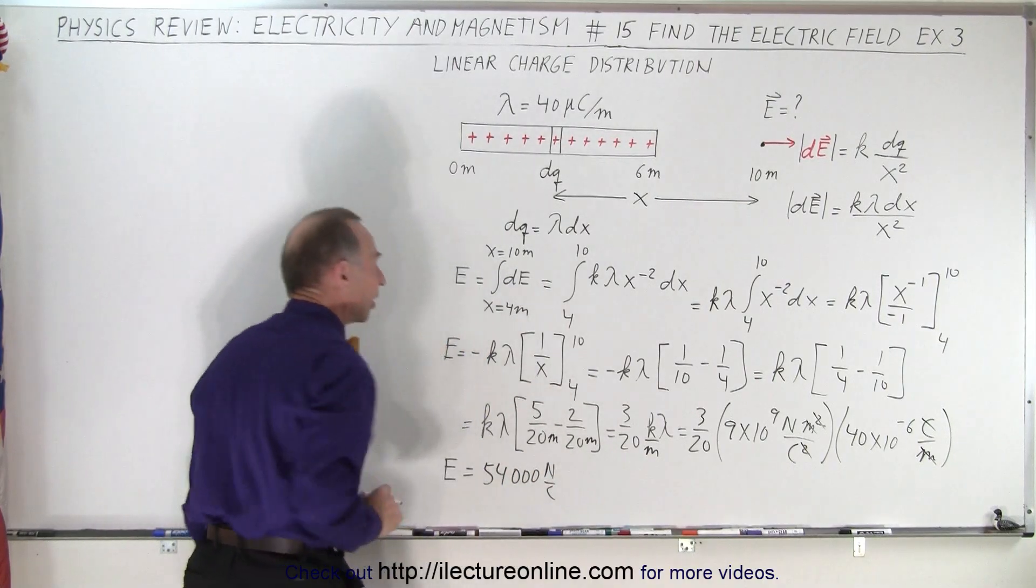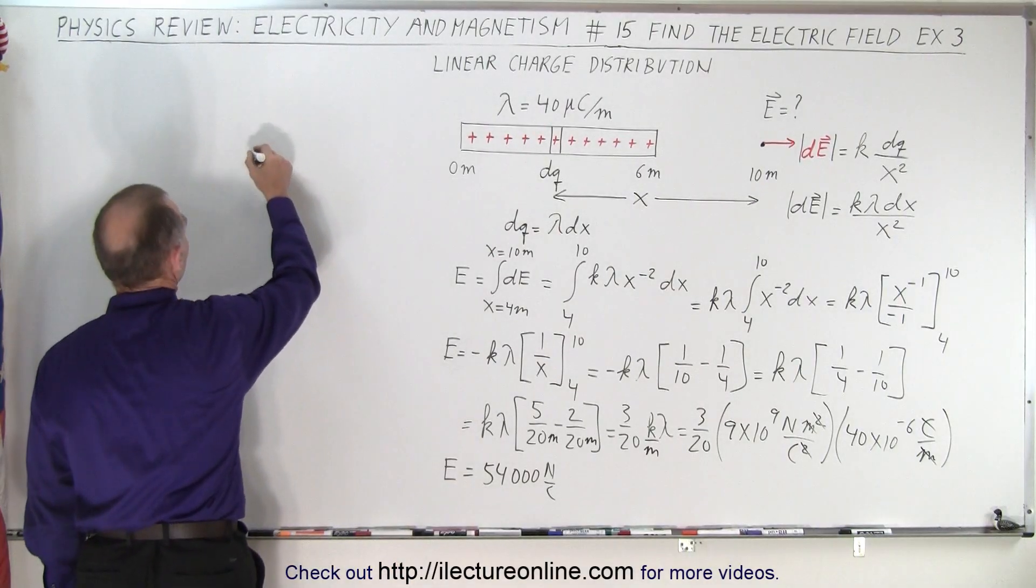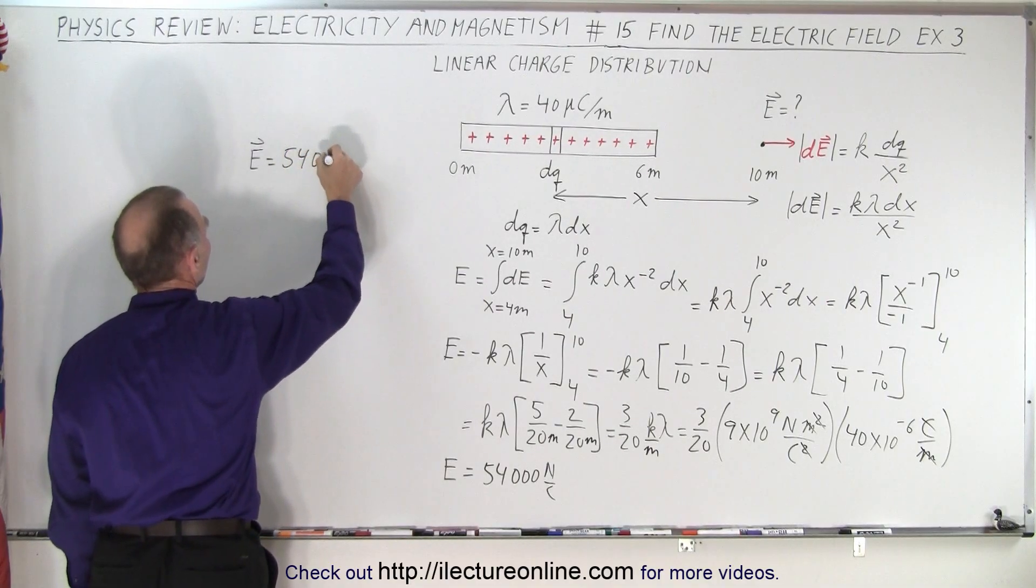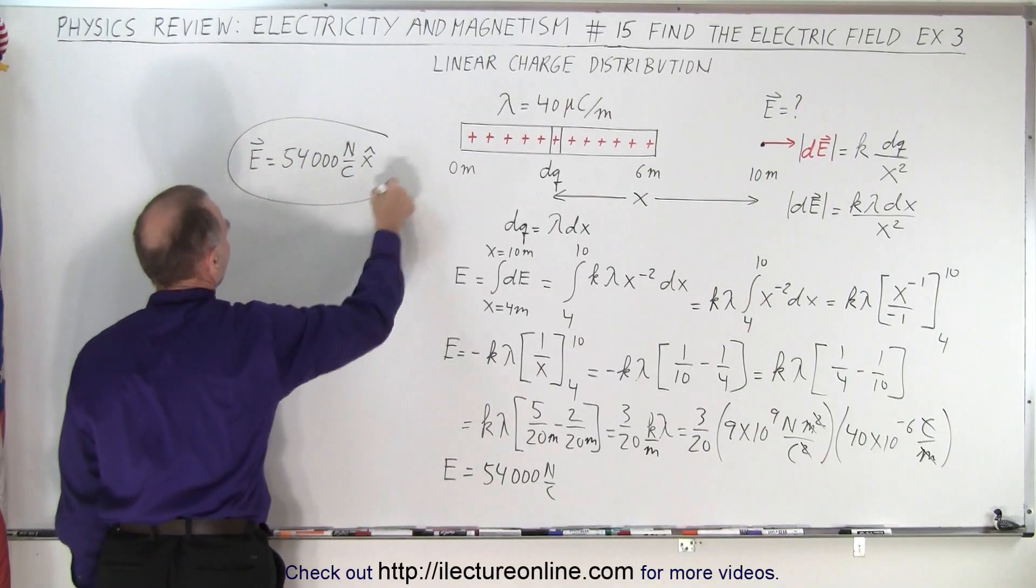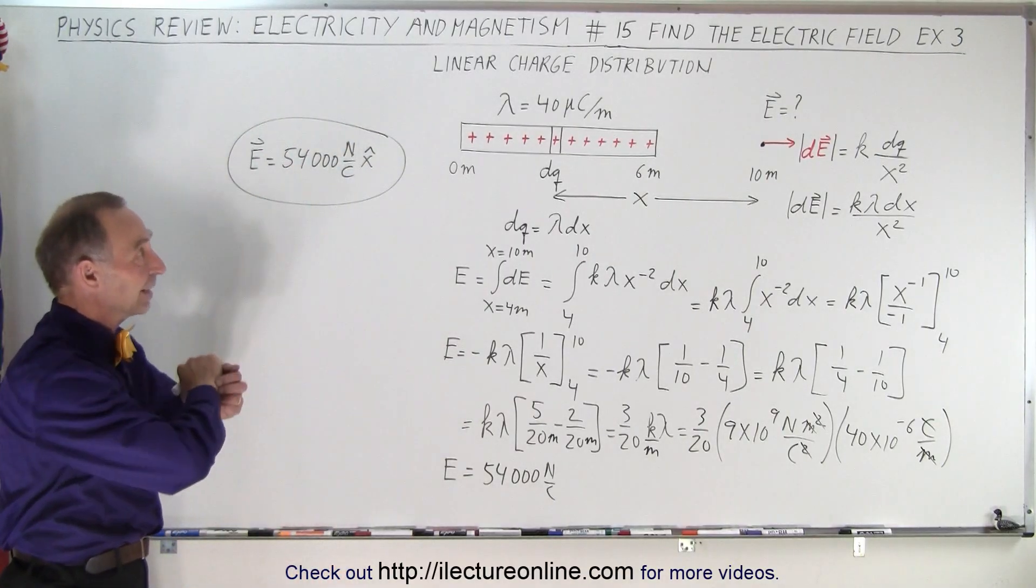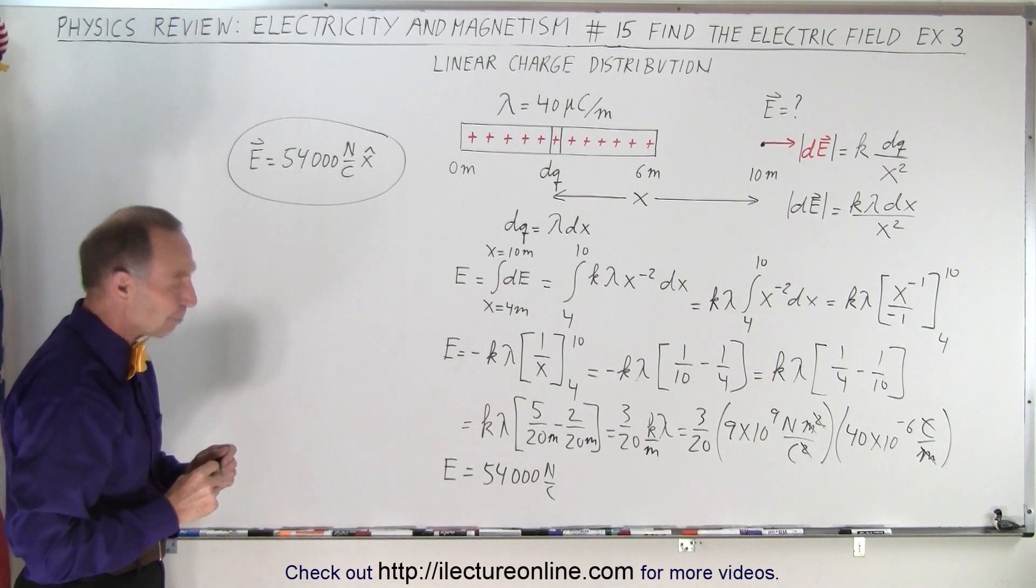Now that's the magnitude of the electric field, since it's pointed to the right. If we want to write in vector format, we get the electric field is equal to a positive 54,000 newtons per coulomb in the x direction, so that's ultimately what we were looking for. And that is how it's done when you have a charge distribution. And keep track of the units.